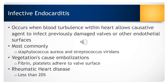Vegetations, which are the primary lesions of infective endocarditis, consist of fibrin, leukocytes, platelets, and microbes that adhere to the valve surface. The loss of portions of these vegetations into the circulatory system can result in embolization.